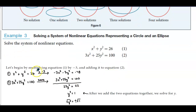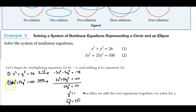We're going to begin by multiplying equation 1 by negative 3 and then adding it to equation 2 to eliminate the x² variable, keeping the second equation the same.